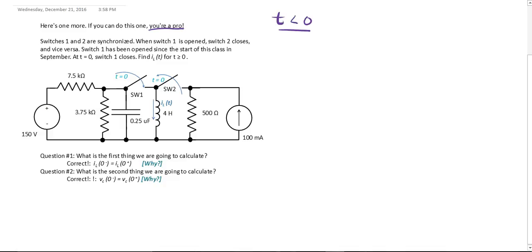Your initial conditions. So when t is less than 0, this switch was closed, and the 100 mA is flowing through the inductor. So IL is equal to 100 mA.